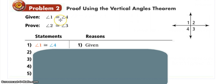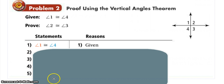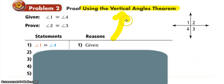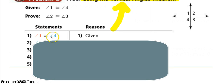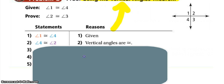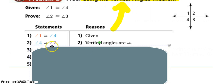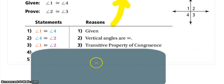Angle one congruent to angle four is our given in problem two. What we're setting out to prove is that angle two is congruent to angle three. We start with our given always. We're going to use the vertical angles theorem. Since I start with one congruent to four, I can find vertical angles for either one and four. If I say that angle four is congruent to angle two, it's because they're vertical and vertical angles are congruent. After we see that, since four is congruent to two and four was congruent to one — one is congruent to four, four is congruent to two — therefore we can say that one is congruent to two by the transitive property of congruence. That's like A to B, B to C, therefore A to C.